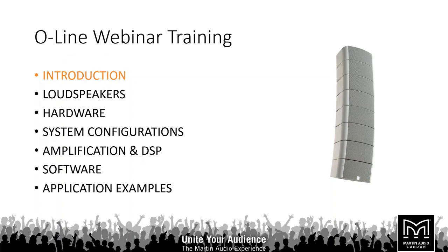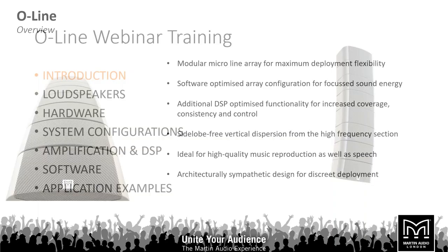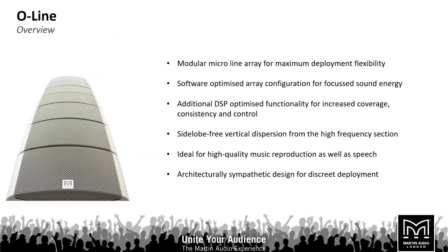Today we are going to be looking over the O-Line system. First of all, it's an award-winning, aesthetically pleasing modular micro line array designed for a wide variety of architectural applications, ranging from houses of worship and transport terminals. It combines innovative acoustic technology with powerful optimization software to achieve optimum coverage and unprecedented accuracy over a predefined area. In many applications, an O-Line array can be driven using only one amplifier channel and processed with basic EQ and limiting.